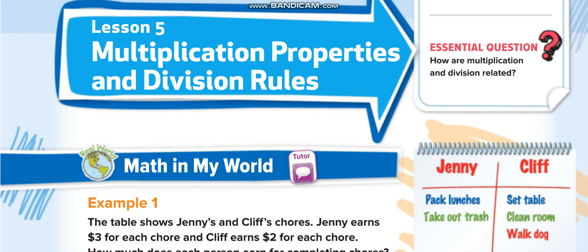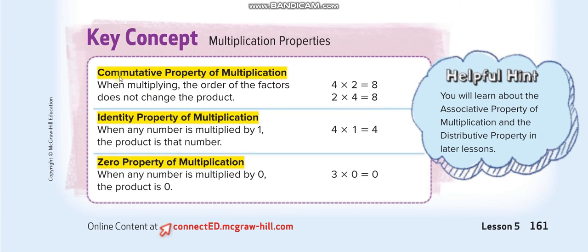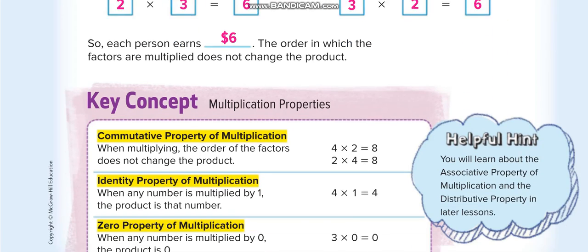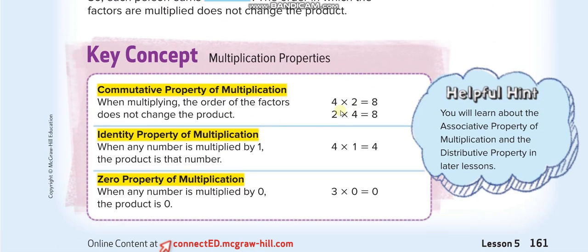We'll start with the multiplication properties. The first one is the commutative property of multiplication — it's just like the commutative property of addition we covered in Chapter 2. If you multiply 4 times 2 or 2 times 4, you get 8. Similarly, 2 times 3 or 3 times 2 gives the same answer. You can switch the two factors while multiplying and still get the same product.